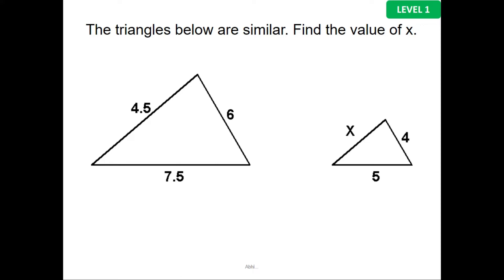Now we have all three sides given in the bigger triangle, and in the smaller one, one of the sides is missing. Step one is to know that the corresponding sides, like the side x here, has the corresponding side with measurement 4.5 on the bigger triangle.